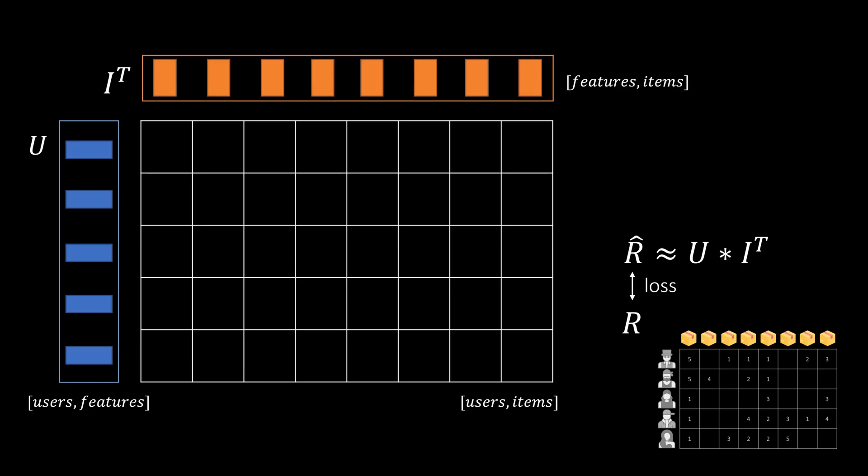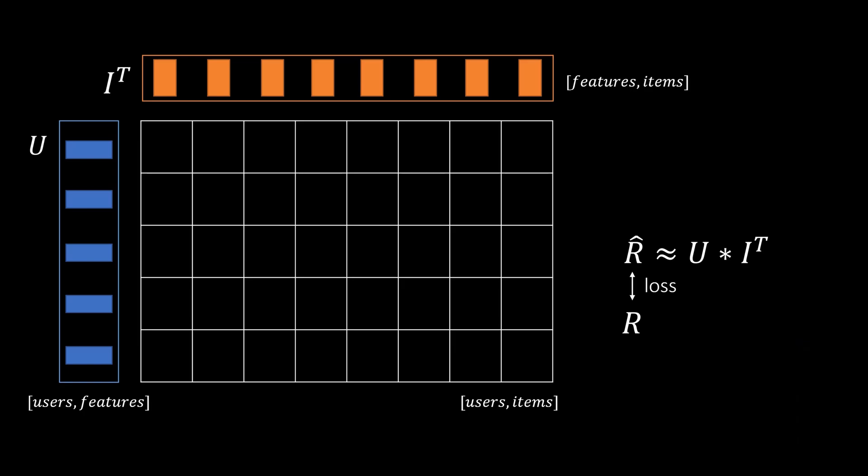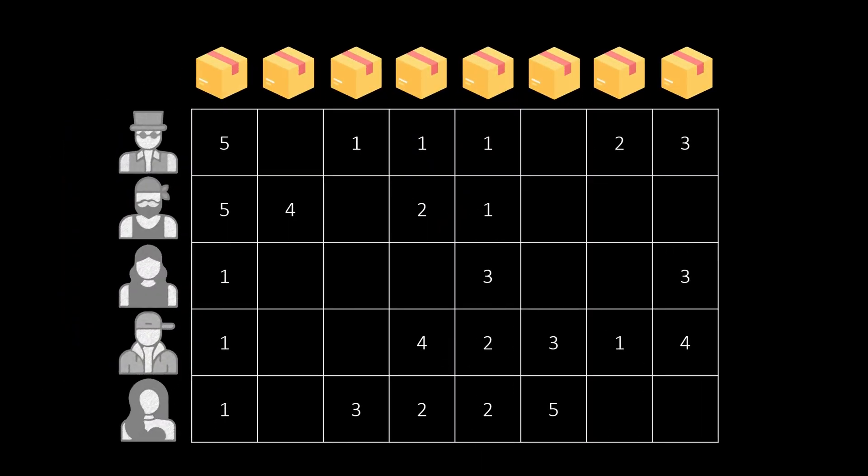This matrix factorization idea has many extensions such as considering user biases for the ratings including additional features or also considering temporal effects. When you think about it we decompose the values of this matrix in such a way so that each of the latent factors contains typical characteristics of that product or item. And this is already some sort of representation learning.